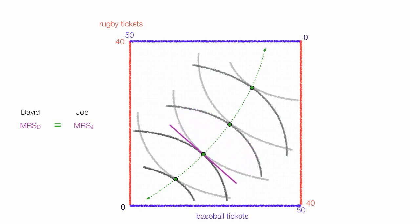And this is true for all points along the contract curve or all those green dots. David and Joe trade where their marginal rates of substitution are equal. That's called efficient distributions.